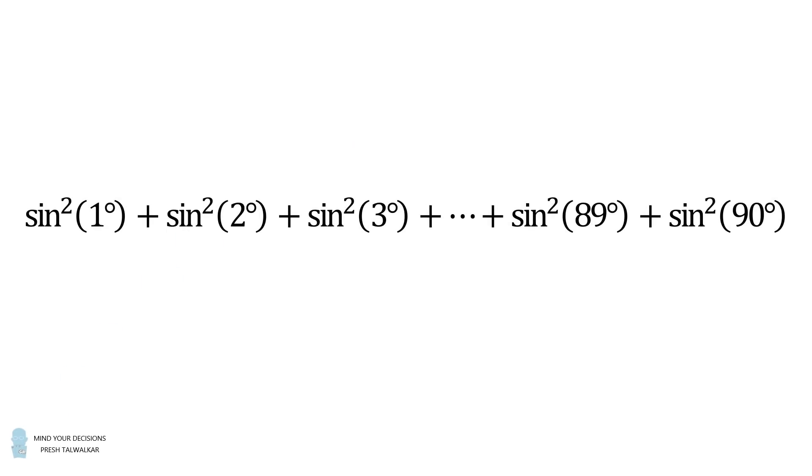Hey, this is Presh Talwalkar. Evaluate the following sum: sine squared of 1 degree, plus sine squared of 2 degrees, plus sine squared of 3 degrees, and so on, until the final two terms, sine squared of 89 degrees, plus sine squared of 90 degrees.